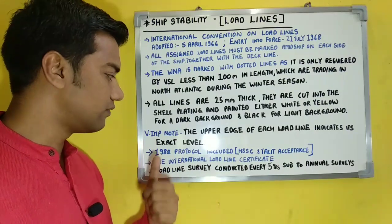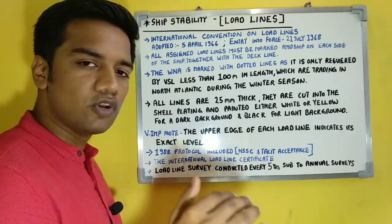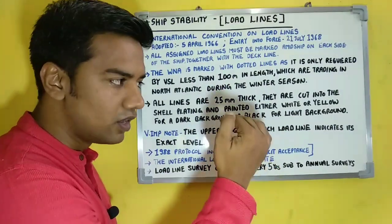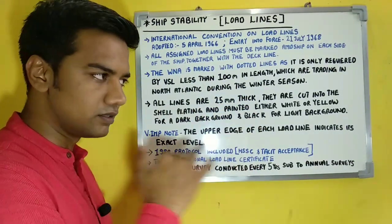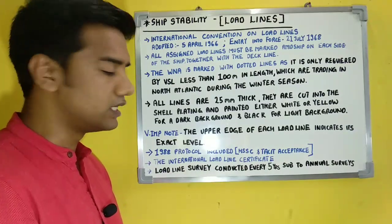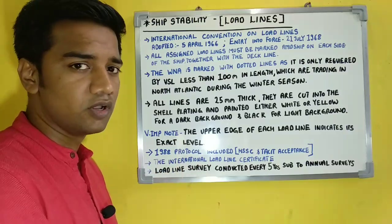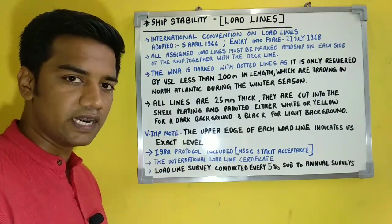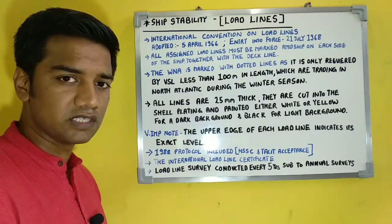The upper edge of each load line indicates its exact level. Your ship is loaded to the summer load line when the water level reaches the upper edge of that line — that is the exact level. The 1988 protocol included the harmonized system of survey and certification, and the tacit acceptance procedure also came into force for the International Convention on Load Lines through this protocol. Load line surveys are conducted every five years, subject to annual surveys.